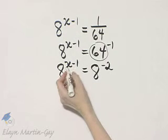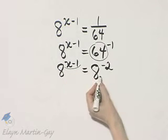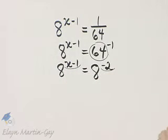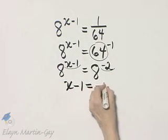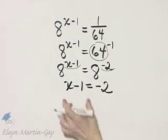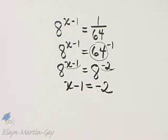If 8 raised to a power of x minus 1 is going to equal 8 raised to a power of negative 2, that will only happen if these exponents equal each other. So notice now I'm setting the exponent on the left side equal to the exponent on the right side. We now solve this for x.